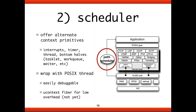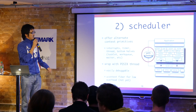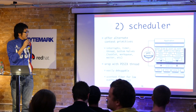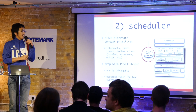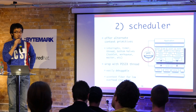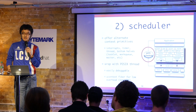The second component is the scheduler for user-space networking. All the original networking code uses interrupts, timers, or other context primitives. In user space we could also use such features, but instead we can use other context primitives like pthreads or ucontext fibers. We re-implement the scheduler using a POSIX thread-based implementation right now, because it's easy to debug.